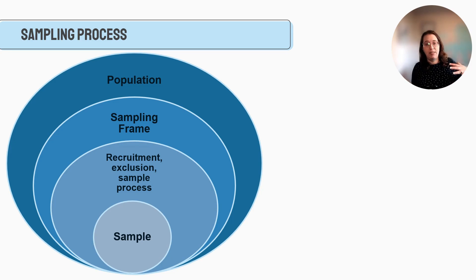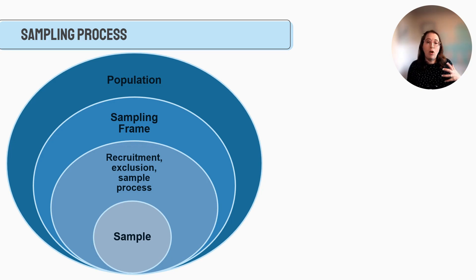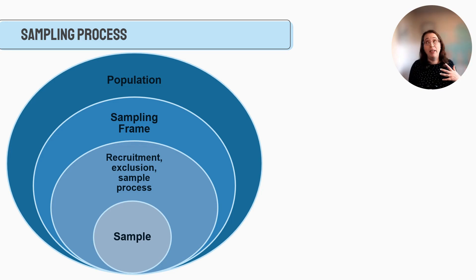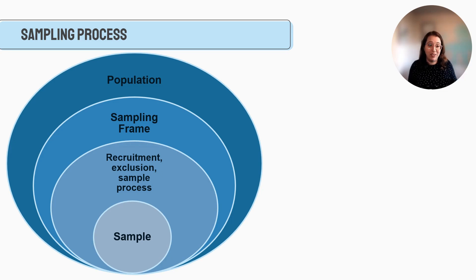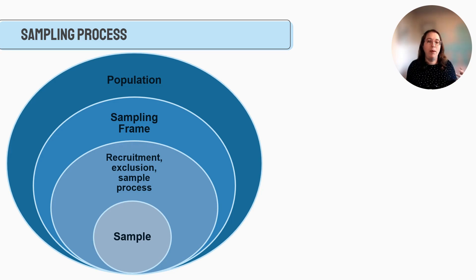When we think about the sampling process, we start with the larger population — every American, every person in a state, every university student, or just social work majors at one university. Ideally, we can get a sampling frame, which is the list from which we draw our sample. It's an intermediate point between the overall population and the sample we draw.